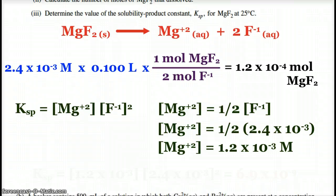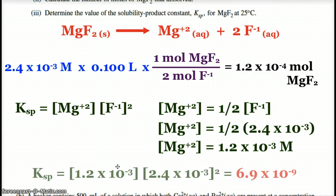Now I have my numbers that I can plug and chug. So I have my concentrations. Again, got to make sure that the fluoride concentration is squared. And that's how we get the Ksp value of 6.9 times 10 to the negative ninth.